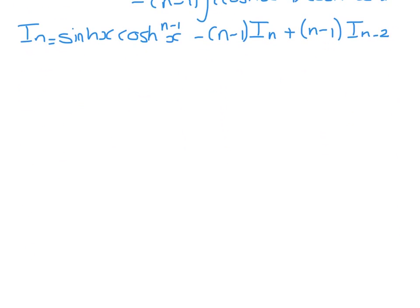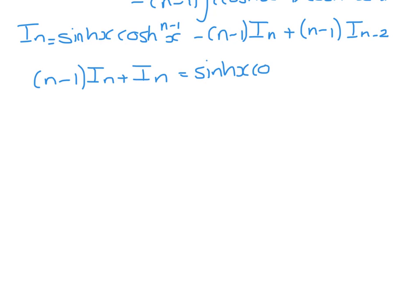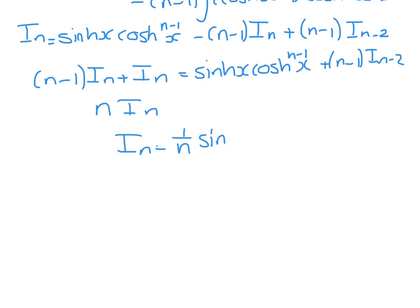So we now need to manipulate our I_n formula. We are going to have n minus 1 times I_n plus I_n equals sinh cosh to the n minus 1 plus n minus 1 times I_{n minus 2}. So n minus 1 plus 1 is n, meaning I_n equals 1 over n times sinh x times cosh to the n minus 1, plus n minus 1 over n times I_{n minus 2}.